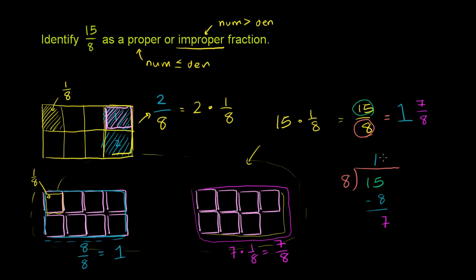So to get 1 and 7 eighths, you get one whole 8 in there. If you have 15 eighths, you get a whole 8 in there, and then you have 7 left over, but these are 7 eighths. So that's where that 7 eighths come from. You have to write the remainder over 8. Hopefully you found that helpful.